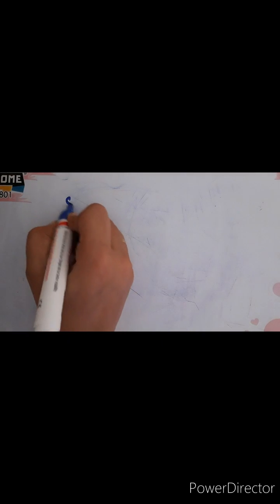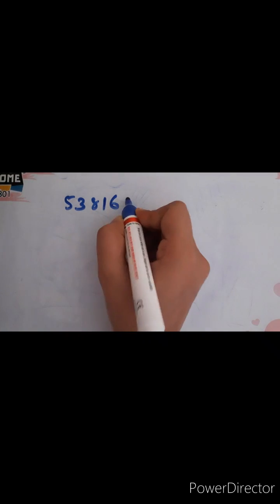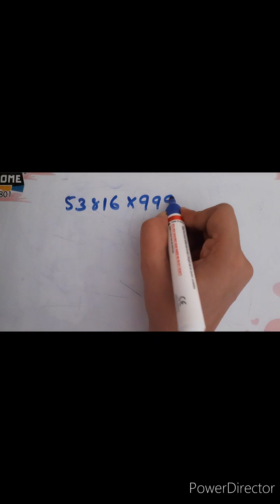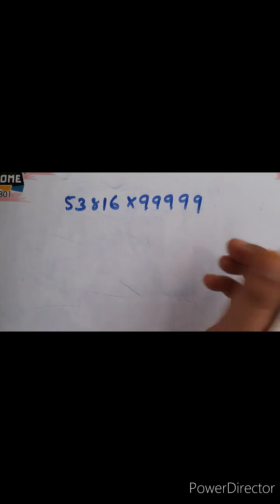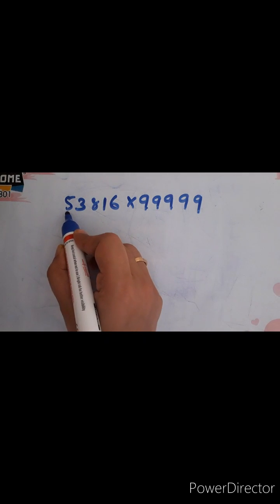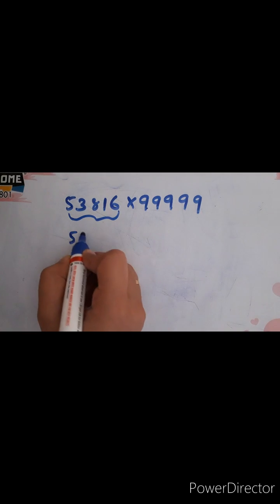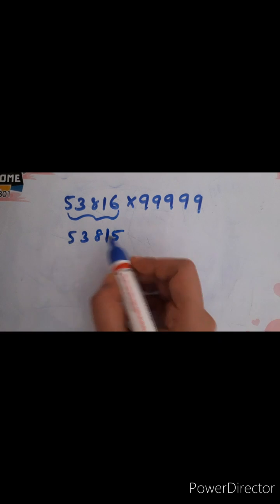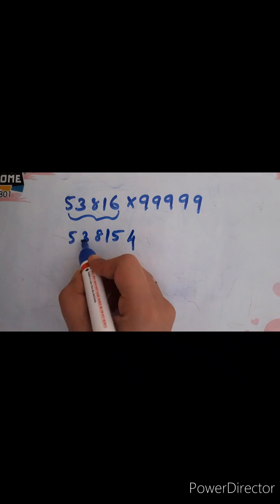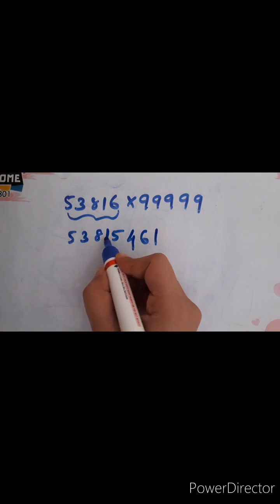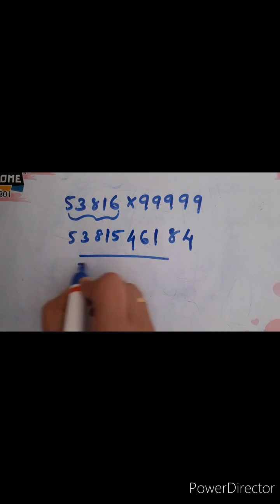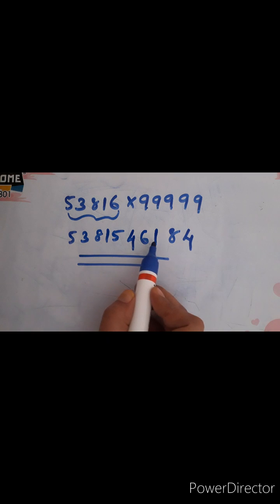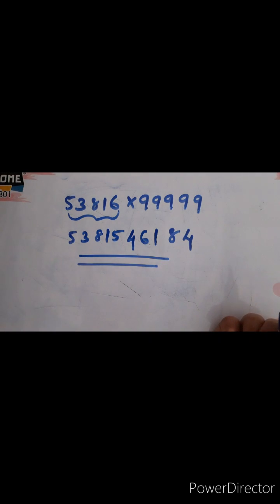One more example: 53816 into 99999. Since this is a 5-digit number, there must be five 9s — only then is this applicable. The number preceding 53816 is 53815. Then find what must be added to each digit to get 9: 5 gives 4, 3 gives 6, 8 gives 1, 1 gives 8, 5 gives 4. So the answer is 5381546184. I hope it is clear for you. Thank you.